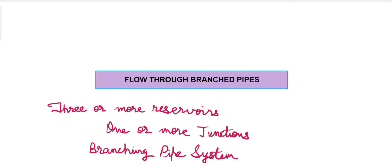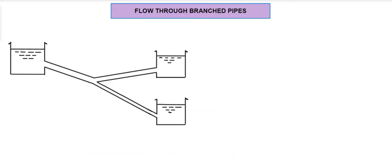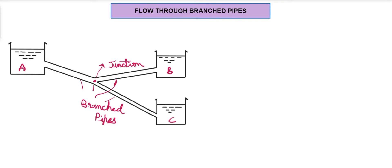These three reservoirs, as you can see in the diagram, are at different levels — reservoir A, B, and C. I have connected these three reservoirs using pipes, and these pipes are known as the branched pipes. As mentioned, we have a single junction here, and I am denoting it with D.